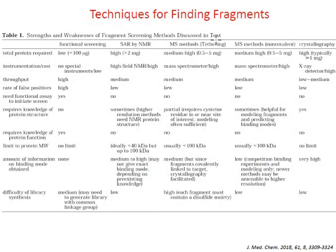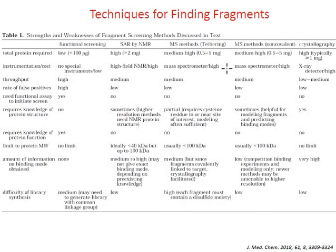This is a comparison of techniques for finding fragments. Each method has its strengths and weaknesses. The total amount of protein required is very low in case of functional screening, whereas higher amounts are needed for NMR, mass spectrometry, and crystallographic methods. No special instruments are required for functional screening, whereas others need high-end instrumentation. The rate of false positives is high in functional screening but very low with other methods.